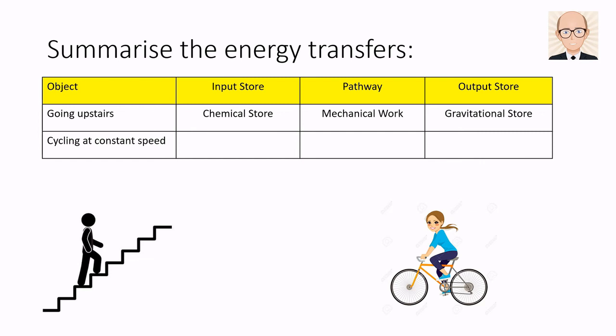The girl on the bike is showing a similar energy transfer, in that she is emptying her chemical store via a mechanical pathway. But since she is travelling at a constant speed, it's not the kinetic store being filled. Instead, it's the thermal store of the surrounding air, road and tyres, as they each receive a tiny increase in temperature.